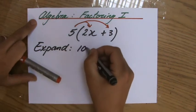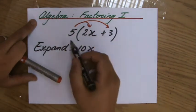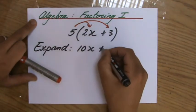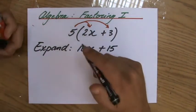All the terms inside the brackets you would multiply by the number directly in front of it, 5 in this case, so 10x, and don't forget that second term, plus 15. That is expanding.